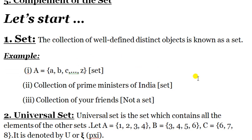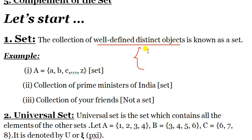A set means a well-defined collection of distinct objects. Well-defined means you can count individually and you can identify. Distinct object means repeated numbers or anything repeated cannot be collected. Remember, a set is always denoted in a curly bracket or second bracket — it is necessary to present it in curly brackets, otherwise it will be wrong.